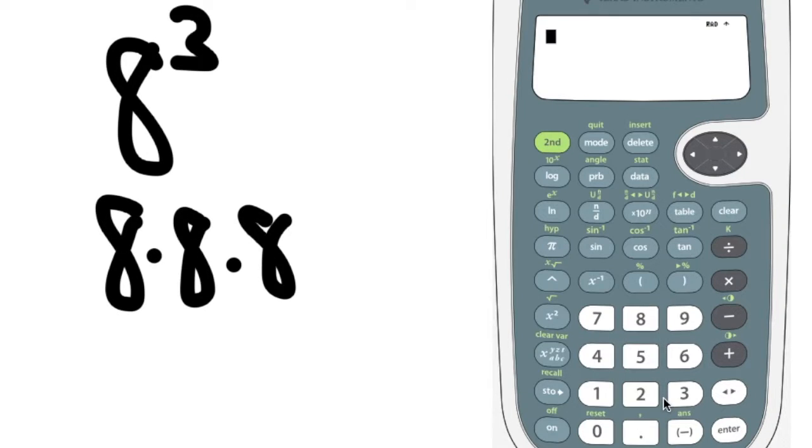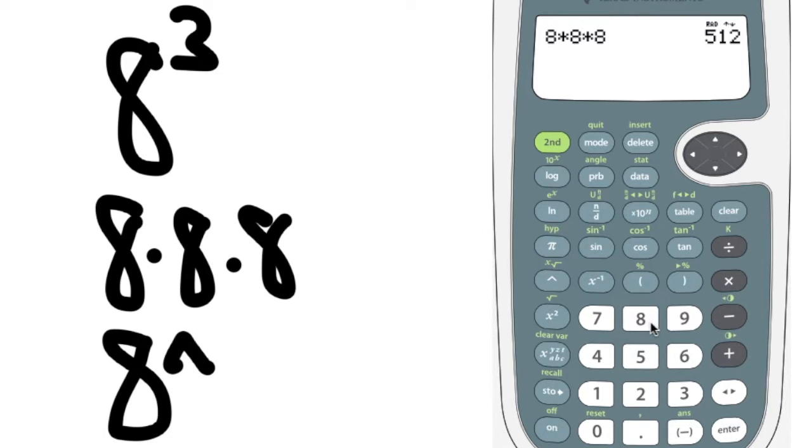Take 8 cubed. You should know that means 8 multiplied 3 times, so 8 times 8 times 8. You could type that into the calculator and find that it's 512. But the calculator also has a special exponent button. It looks like a little carrot that points up. You push that little carrot and you can type in the exponent of 3 and you will still get 512.